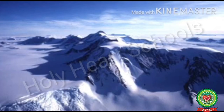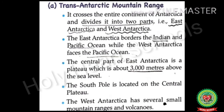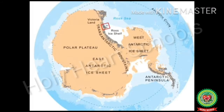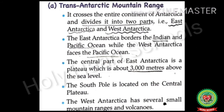The Trans-Antarctic Mountain Range crosses the entire continent of Antarctica and divides it into two parts: East Antarctica and West Antarctica. East Antarctica borders the Indian and the Pacific Ocean, while West Antarctica faces the Pacific Ocean. The central part of East Antarctica is a plateau about 3,000 meters above sea level, where the South Pole is located. West Antarctica has several small mountain ranges and volcanoes.